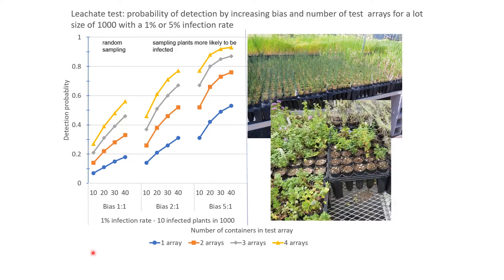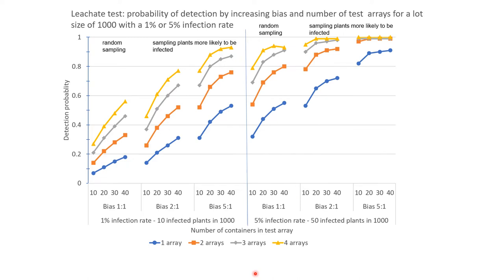The other way we can improve our odds is by sampling with bias whenever possible — simply sampling plants that are more likely to be infected. If we see a patch of dead plants with others around them, those surrounding surviving plants would be the ones we'd want to sample, as they're more likely to be infected if this was a root disease situation. Biased sampling increases our detection probabilities much higher and faster, regardless of how many plants we include in the test or how many tests we run, because we're effectively increasing the likelihood of having a higher percentage of infected plants in the test. At a 5% infection rate, our detection efficiencies are much higher, and with bias, we can be almost certain of detection most of the time.